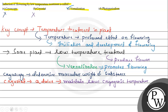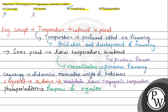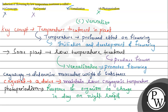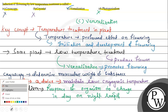Now let's talk about the last option, photoperiodism. Photoperiodism is the response of any organism towards the change in the day or night length — the response of an organism to change in day or night length is called photoperiodism. So this last option also cannot be the answer. The correct answer for this particular question is vernalization, which is option C.